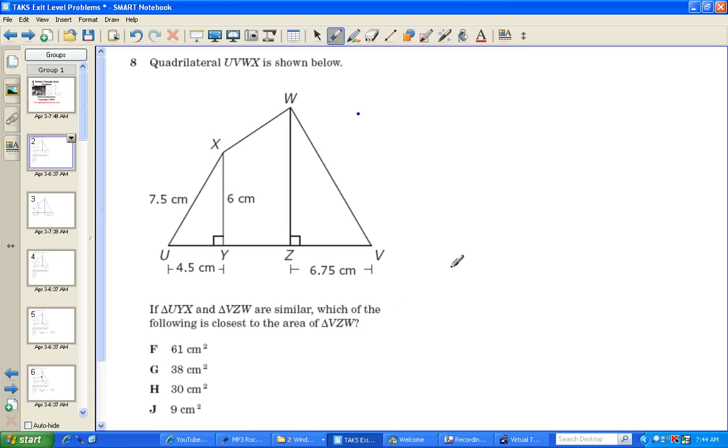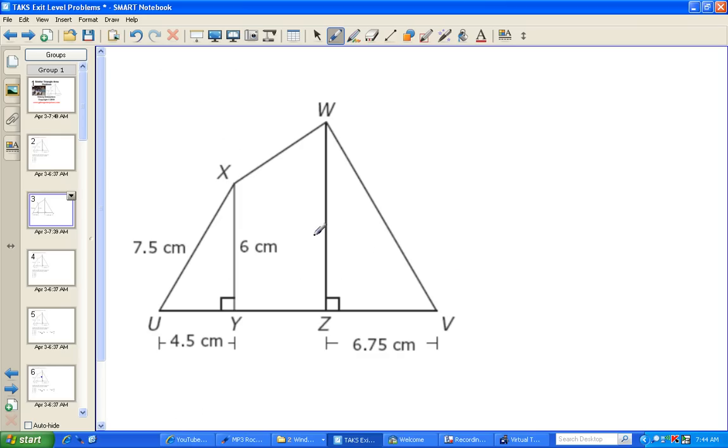The first thing I like to do when I see a problem like this is to take a good look at it. We have this smaller triangle here, UYX, which is similar to this large triangle, VZW. And they have the same proportions, but a different orientation as they are flipped from each other.